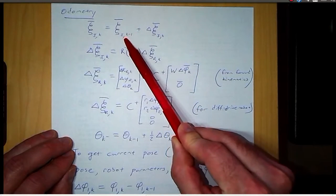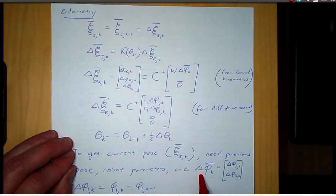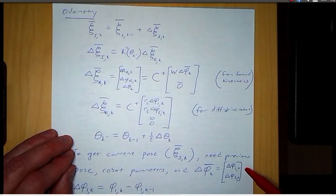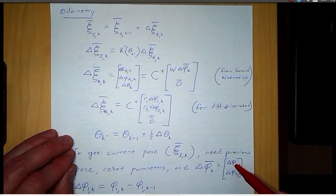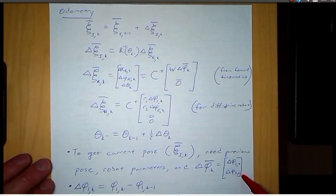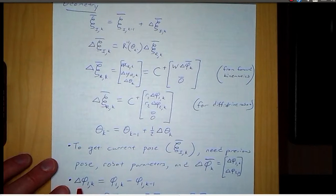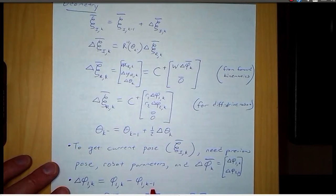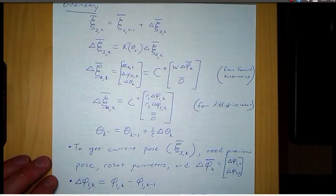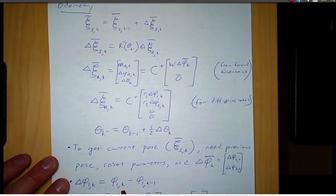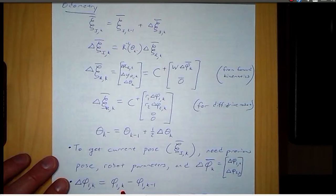In addition to the previous Cartesian position, we're also given a change in wheel angles, so that looks like delta phi k. This is a vector, so for our differential drive robot with two wheels, we're going to have delta phi 1 at time k and delta phi 2 at time k. Delta phi 1 at time k is equal to the difference between phi 1 at time k and phi 1 at time k minus 1. So what we're doing is monitoring the wheel angle, and phi 1 at time k is how far the wheel has turned since we started watching it.